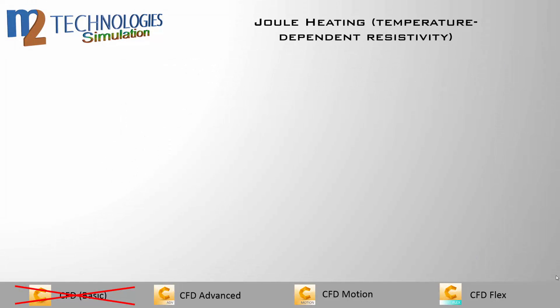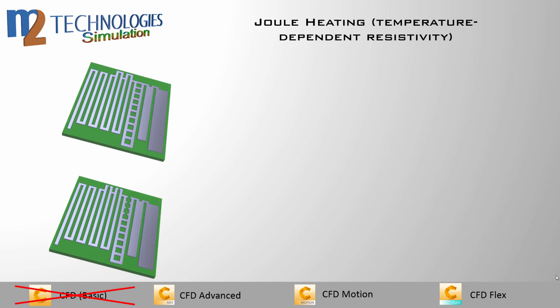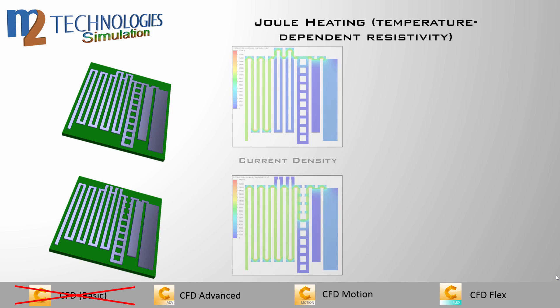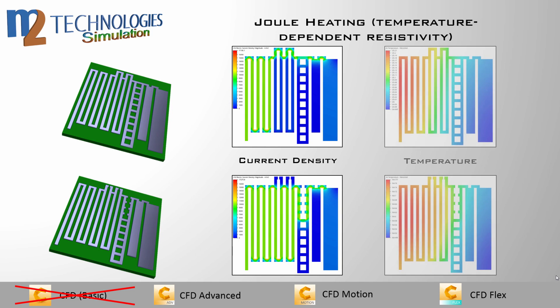Joule heating is the generation of heat by passing an electric current through a metal. Also known as resistance heating, this function simulates heating due to electrical resistance. Examples include stovetop burner elements and space heaters. The primary inputs are current, voltage, and the material resistivity. Outputs include current density, ohmic loss, and temperature.